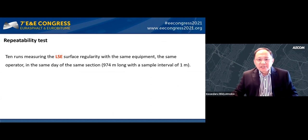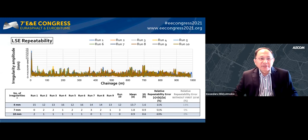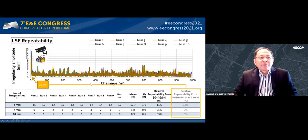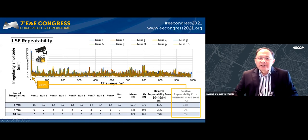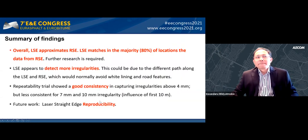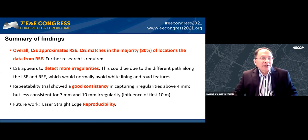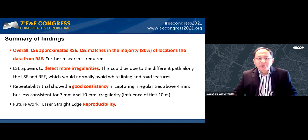Repeatability testing was performed using the same equipment on a one-kilometer trial section with 10 runs, recording irregularities above 4, 7, and 10 mm. Initially the data appeared concerning with a high error margin; however, a closer look at the video survey revealed a joint in the first 10 meters. Removing that data substantially improved the error margin and showed good repeatability across the 10 test runs. The laser-based methods appear to approximate the conventional rolling straight edge but detect more irregularities. Further work on reproducibility is still needed.